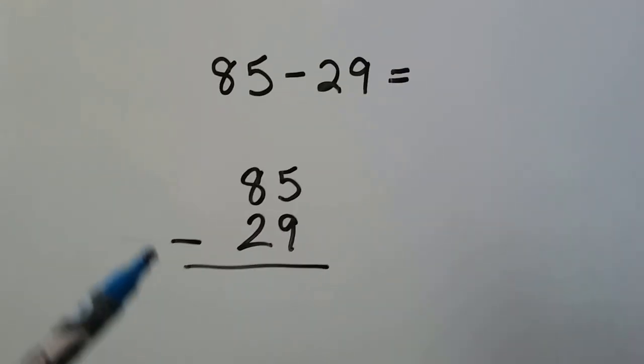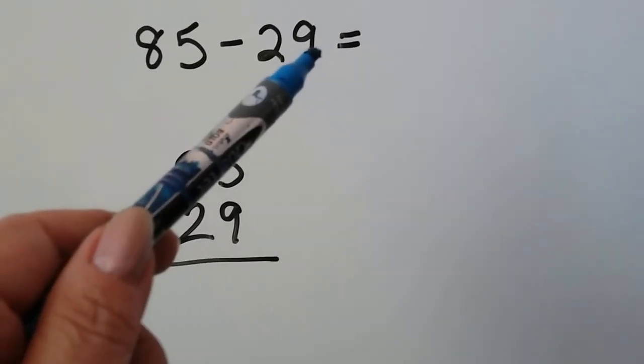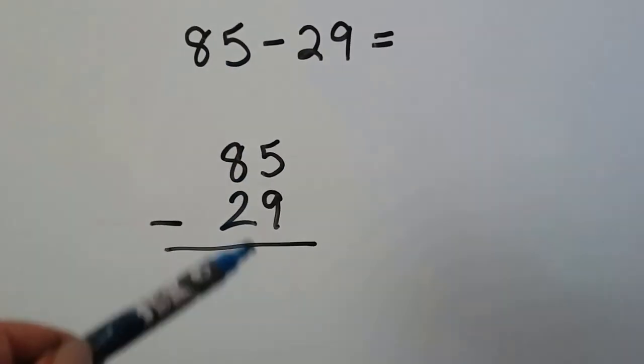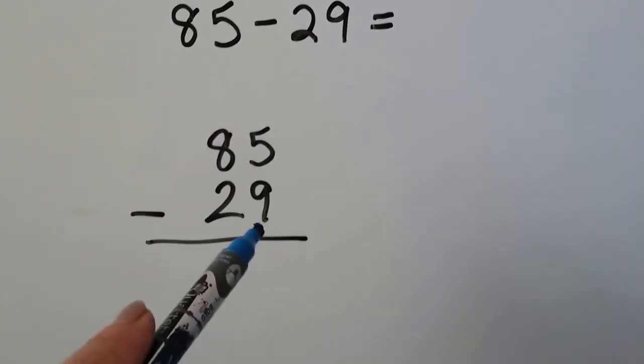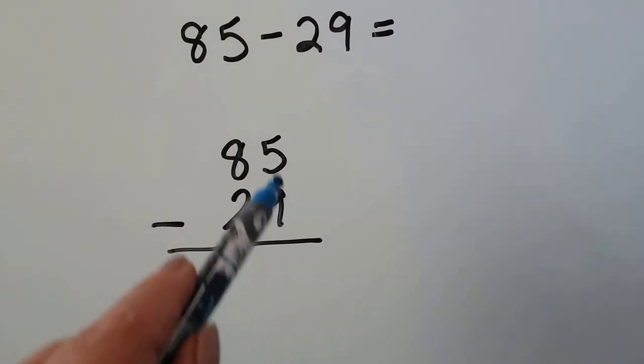We have a number sentence, 85 minus 29. We can see the 9 is larger than the 5, so we can rewrite it stacked. We know we have to regroup because the 9 is larger than the 5.